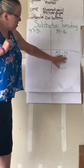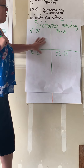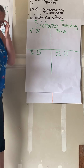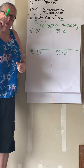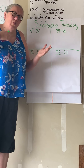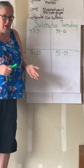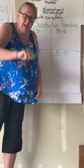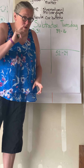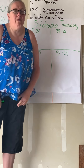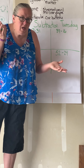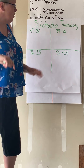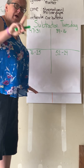All right, where is Subtraction Tuesday? I want us to go back to double digit subtraction. The main thing I want you to understand is why it's so important for you to always start with your ones place when you're subtracting. It's really, really important. Well, I'm going to show you today. We're going to do different strategies to solve these problems.